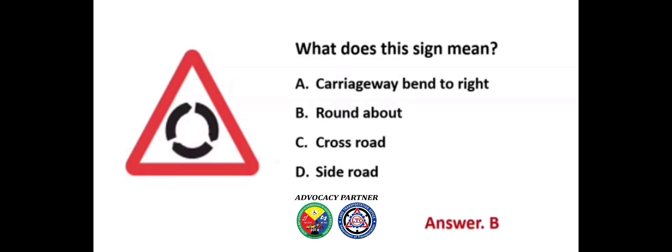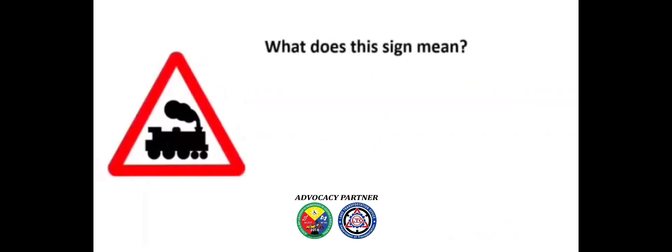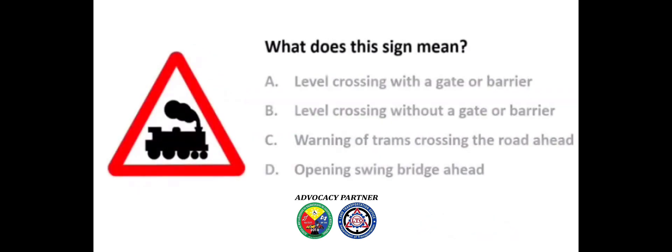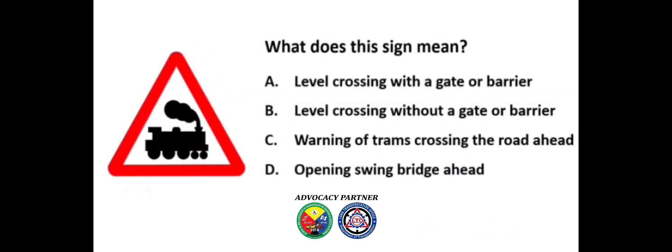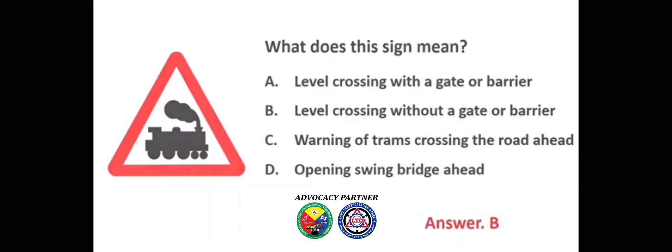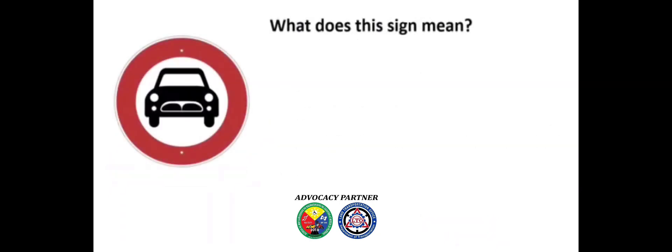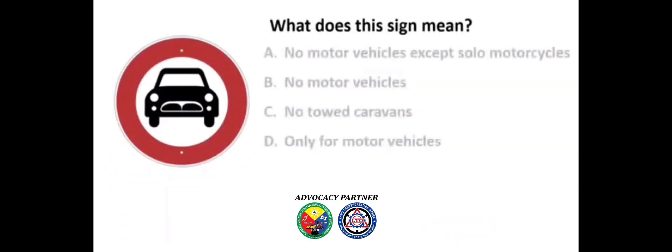What does this sign mean? A) Level crossing with a gate or barrier, B) Level crossing without a gate or barrier, C) Warning of tram crossing the road ahead, D) Opening swing bridge ahead. Answer: B) Level crossing without a gate or barrier.